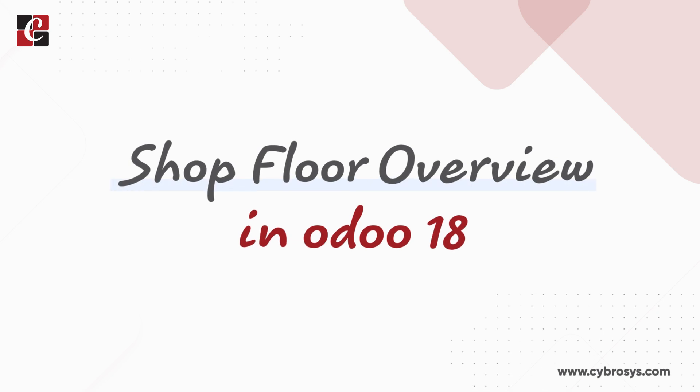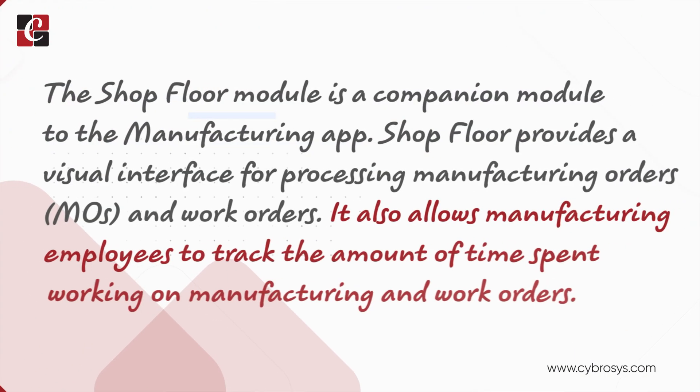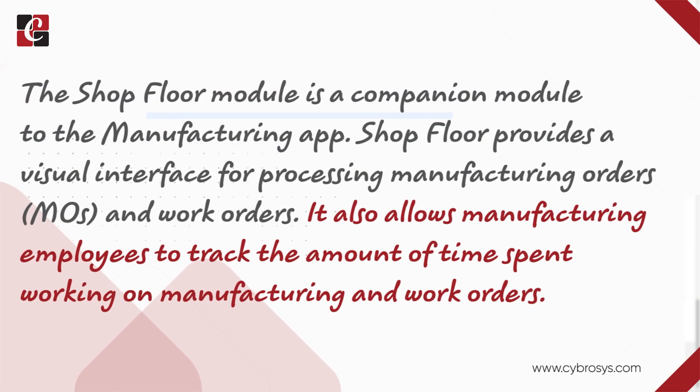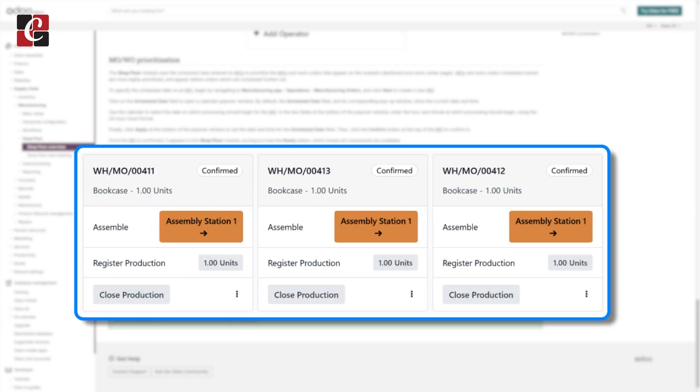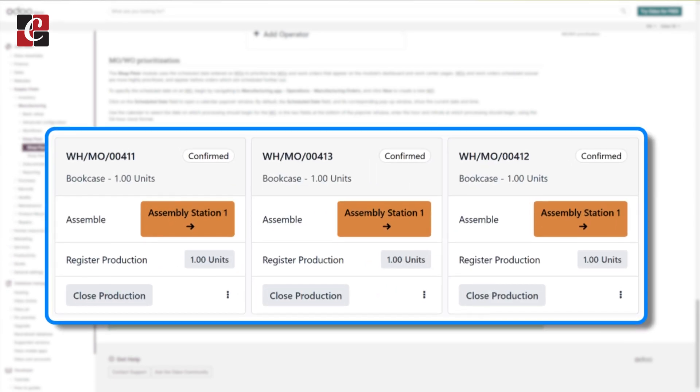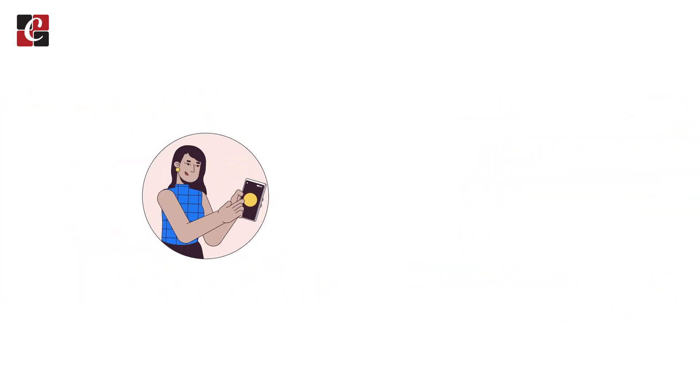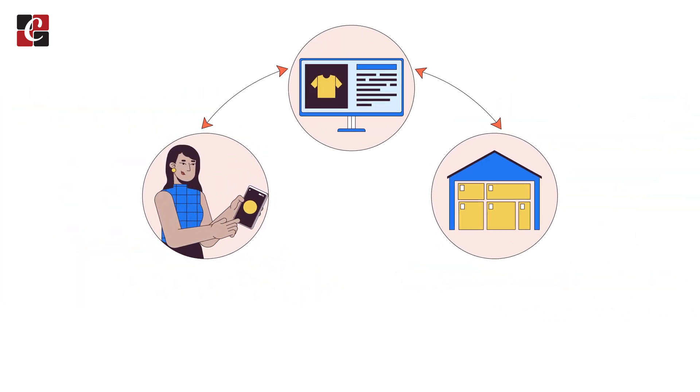Welcome back. In today's video we will be discussing the Shop Floor overview. The Shop Floor module was introduced in Odoo 17 and it's a companion module to the manufacturing app. It provides a visual interface for managing manufacturing orders and work orders, and employees can easily track the time spent on each manufacturing order and on different work orders.